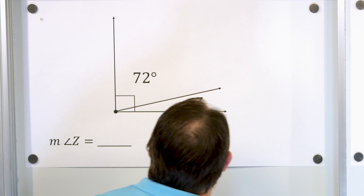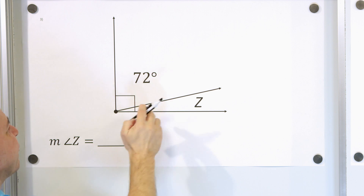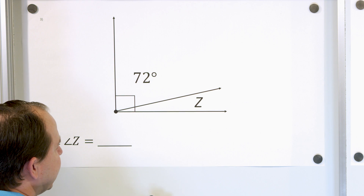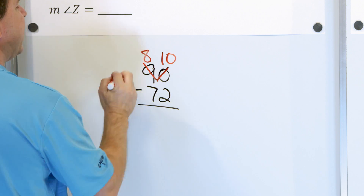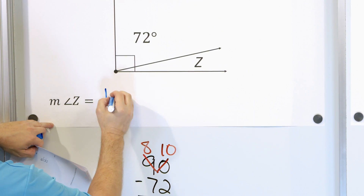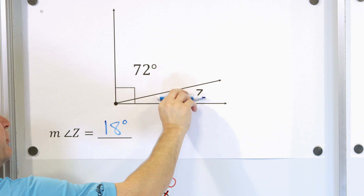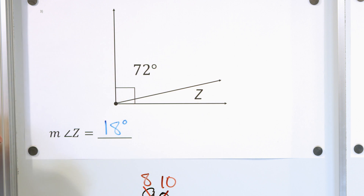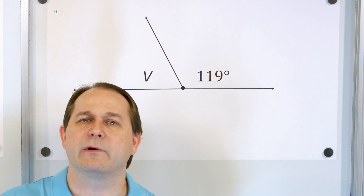Let's take a look at problem three. We want to find the measure of angle Z. The larger angle is a 90-degree angle because of the square symbol here. So we start with 90 degrees and subtract off the 72-degree angle, and whatever is left over must be Z. 90 minus 72: we borrow, 10 minus 2 is 8, and 8 minus 7 is 1 — so angle Z is 18 degrees. It makes sense that this is a much smaller angle, because it looks much smaller than the 72-degree angle. We know that 18 plus 72 must equal 90, because these are complementary angles. Complementary means they add to 90; supplementary means they add to 180.